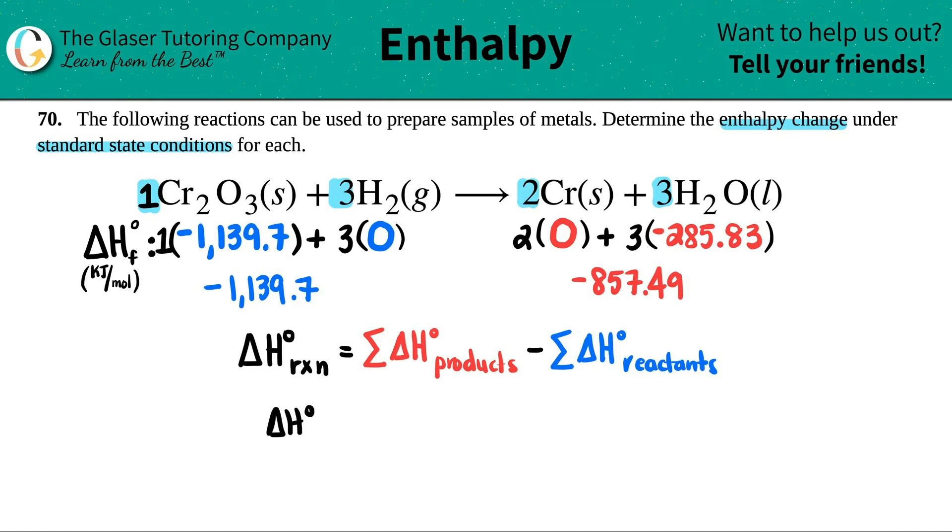Delta H. The change in the enthalpy for the whole reaction is the sum of the products, which would be negative 857.49 minus the sum of the reactants, which was negative 1139.7. And remember, keep, change, change. This would technically be plus a positive when you're minusing a negative. So the overall enthalpy for the whole reaction would be plus 1139.7.